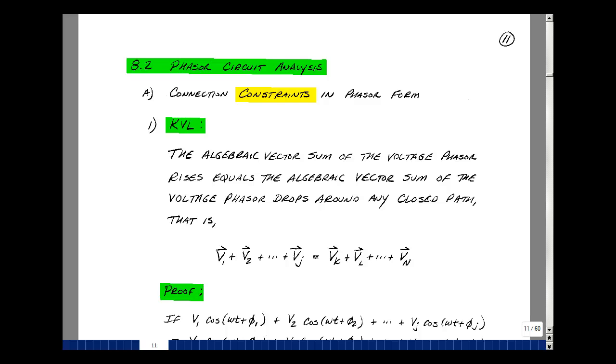Let me start by stating Kirchhoff's voltage law for phasors. The algebraic vector sum of the voltage phasor rises equals the vector sum of the voltage phasor drops around any closed path.